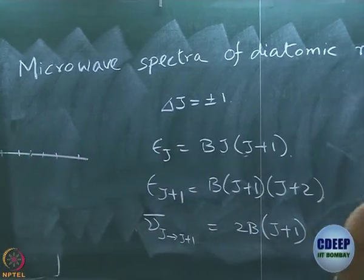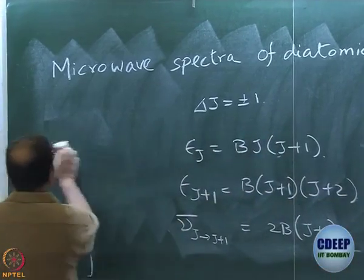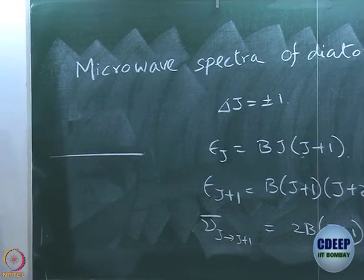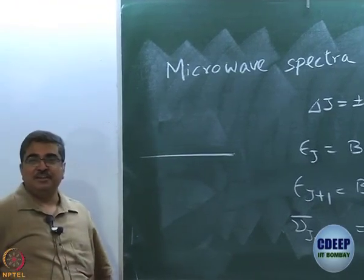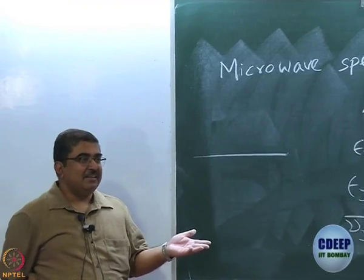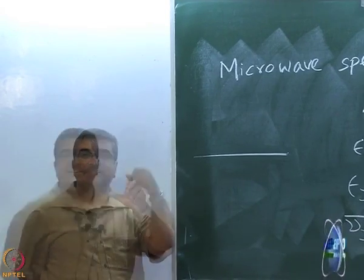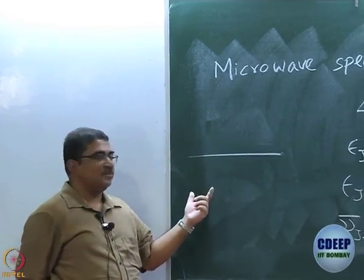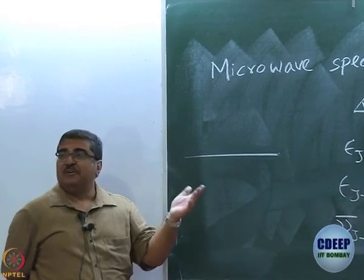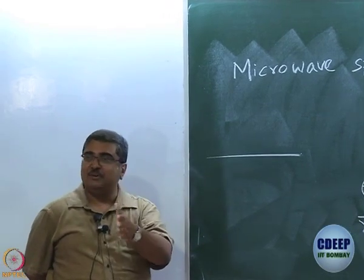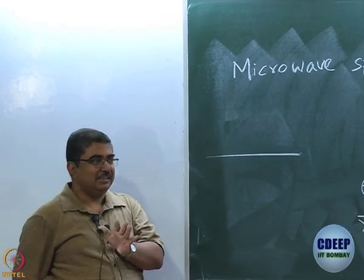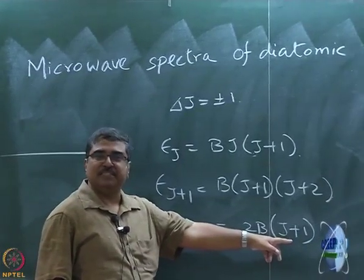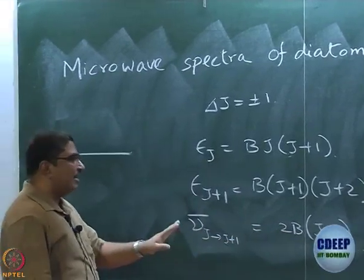Where do we expect the first line? It cannot be at zero, because if a line occurs at zero that means there is no transition. So the first line occurs at J=0, which is the smallest value anyway, meaning the first line occurs at 2B.